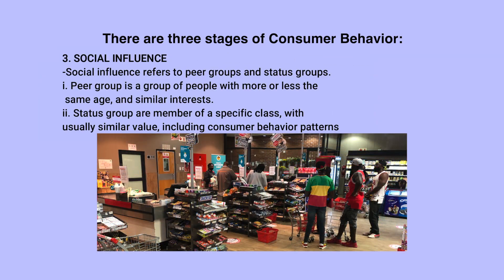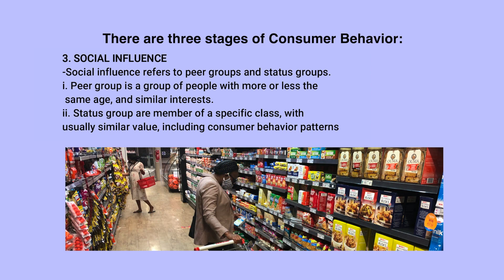The third is social influence. Social influence refers to peer groups and status groups. A peer group is a group of people with more or less the same age and similar interests. A status group are members of a specific class with usually similar values, including consumer behavior patterns.